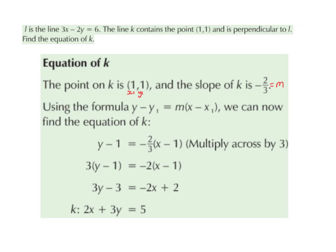To get rid of the fraction, we multiply across by 3. So y minus 1 multiplied by 3 gives 3 times (y minus 1), and minus 2 over 3 multiplied by 3 gives minus 2, all times (x minus 1). Expanding: 3y minus 3 equals minus 2x plus 2. Bringing numbers to the right and letters to the left: minus 3 becomes plus 3, and minus 2x becomes plus 2x, giving 2x plus 3y equals 5. This is the equation of k.